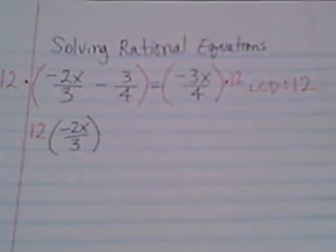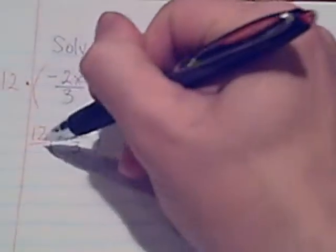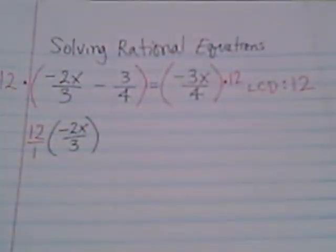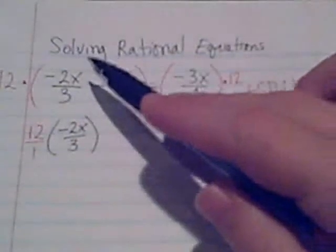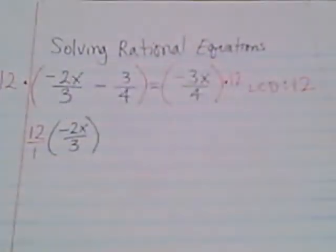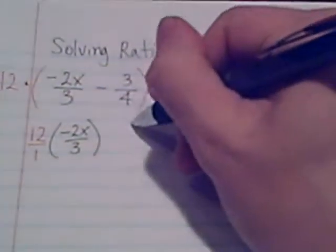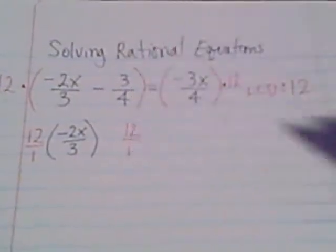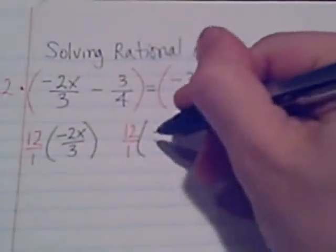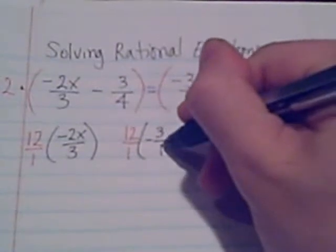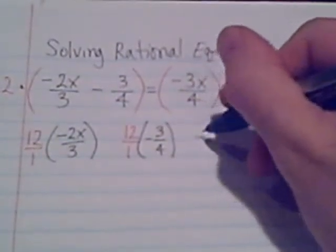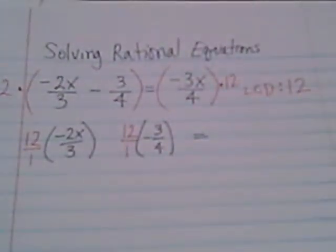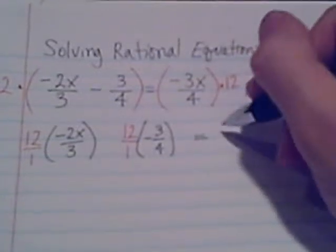In my experience, some people like to make the 12 into 12 over 1 because it's more helpful to see that we're multiplying fractions. So if it's helpful, by all means do that. Our 12/1 times the first term, negative 2x over 3. Then 12/1 times our second term, negative 3/4. And on the right side, we have 12 times negative 3x over 4.